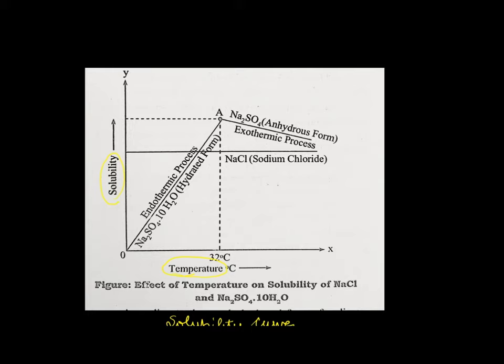Whenever we plot solubility against temperature, the curve we get is called the solubility curve. Normally this curve is continuous — depending upon whether you have an exothermic or endothermic reaction, there will be an increase or decrease in solubility. If we find any abrupt change in the solubility curve, that means the phase of my drug — in other words the character of my drug — is getting changed. I will explain this with the help of an example.